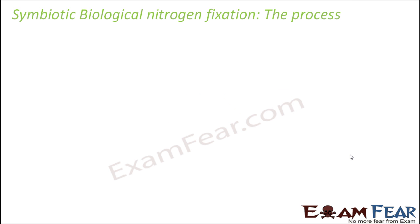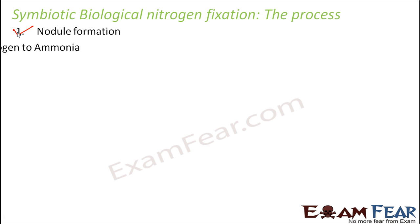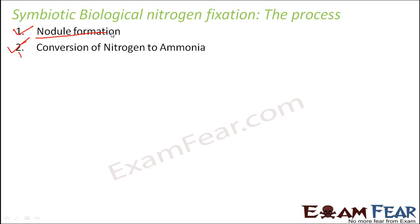So now let us talk about the process. This process broadly consists of two major steps. The first step is nodule formation — how the nodules are formed — because nodules are the main sites which help in the nitrogen fixation process. The second step is conversion of nitrogen into ammonia.